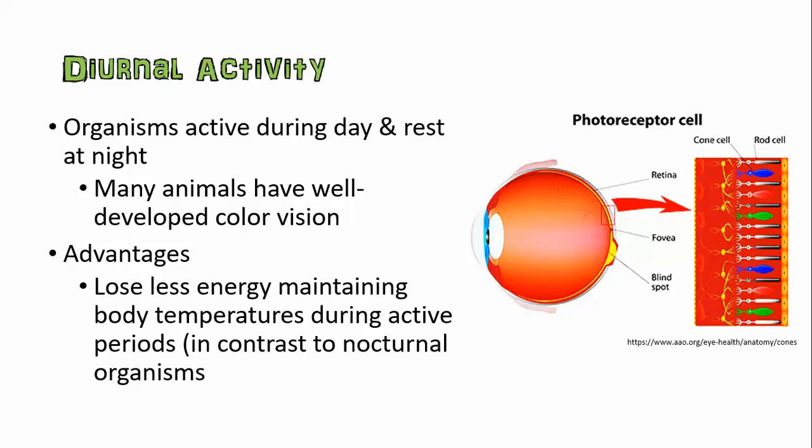Diurnal organisms are active during the day and rest at night. Many organisms that are diurnal are going to have well-developed color vision, and therefore a lot of cone cells and fewer rod cells. There are some advantages to being diurnal — for example, you lose less energy to maintain your body temperature while active. It's easier to maintain body temperature during the day than at night when it tends to be colder, so being diurnal can help with energy efficiency.